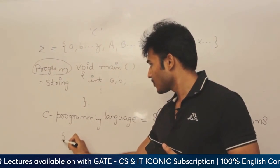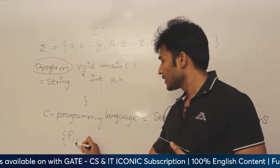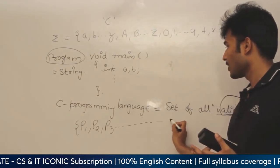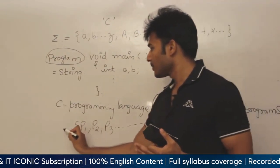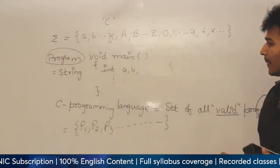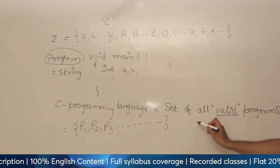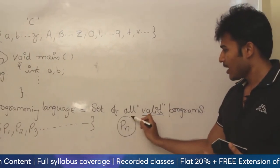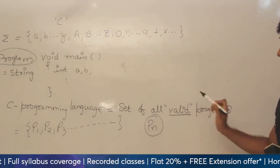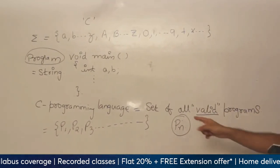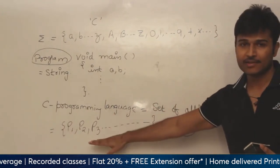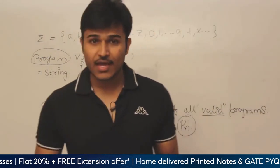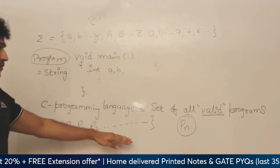You can write any number of valid C programs — let us say P1 is a program, P2 is a program, P3 is a program, so on, infinite. So, the C programming language is going to be infinite. Now, the next question is: given any program PN, how can you say that it is valid? We can say that it is valid if the program is present in this set, in this language. The question is, how can I find out whether a given string is in the language or not?